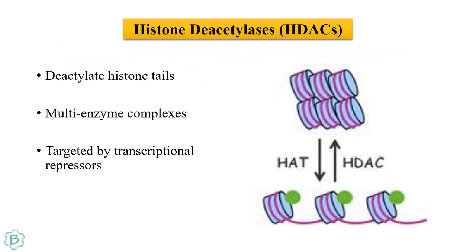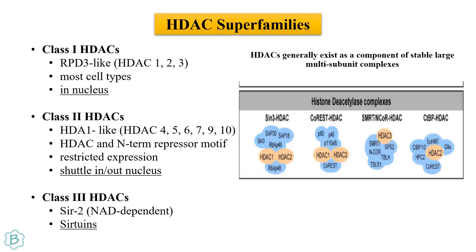Histone deacetylases deacetylate histone tails; they also exist in multi-enzyme complexes and can be targeted by transcriptional repressors. When histone acetyltransferase causes acetylation, there is opening up of chromatin; when it is deacetylated, it leads to compaction of chromatin. Histone deacetylases are present in three different classes — sirtuins are the most famous — and they also remain in multi-subunit complexes like histone acetyltransferases.